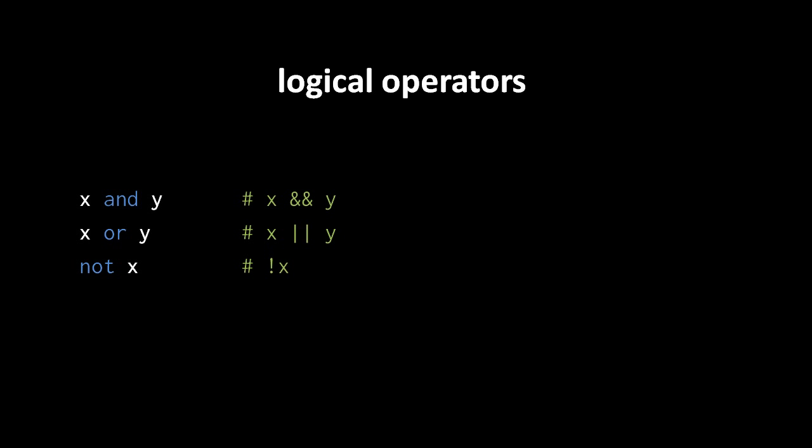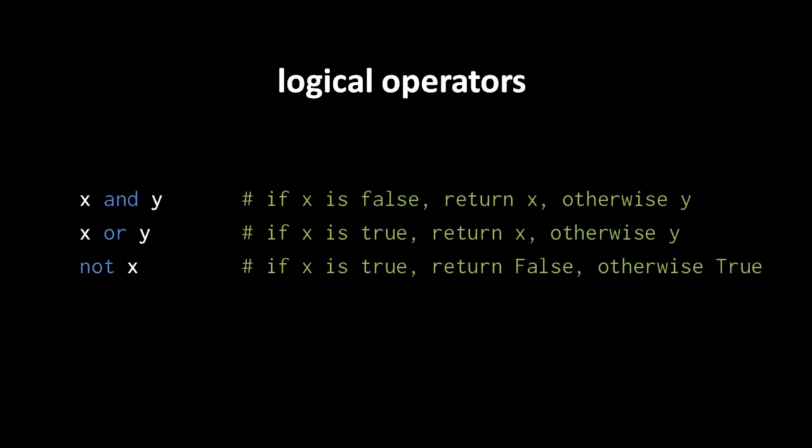When it comes to the actual operation of these operators, the 'not' operator acts like you'd expect. It returns the inverse truth value of whatever the operand is — so if x is true, then 'not x' will return false. And if x has a truth value of false, then 'not x' will return the Boolean value true.